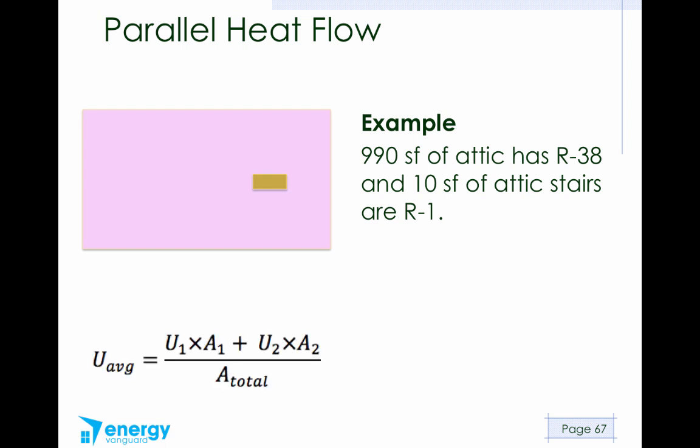We apply this formula. U average equals U1 times A1 plus U2 times A2 divided by A total. Remembering that we're given R values here, but we have to put U values in the equation. We know the relation between R and U. If we want U and we know R, U equals 1 over R. So here's what we've got. Pathway 1 is the insulated part, and U1 would be 1 over 38. A1 would be 990. So we do this first, and here's a little tip for you. Instead of doing 1 over 38 in your calculator and then multiplying that by 990, the easy way to do this is just 990 divided by 38. It gives you the same exact answer.